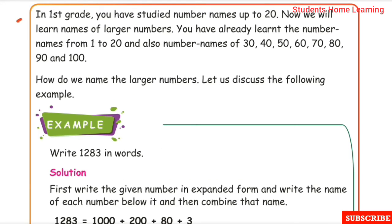In 1st grade, you have studied number names up to 20. Now we will learn names of larger numbers. You have already learned the number names from 1 to 20 and also number names of 30, 40, 50, 60, 70, 80, 90 and 100. How do we name the larger numbers? Let us discuss the following example.